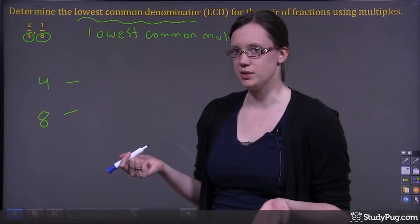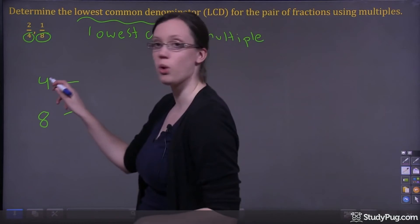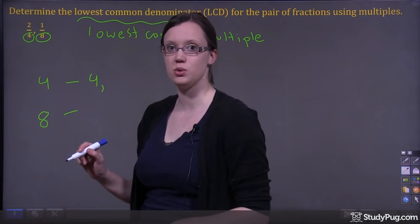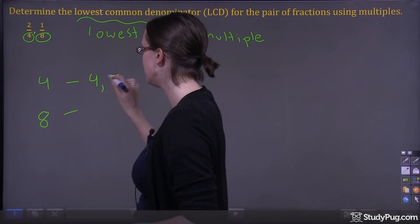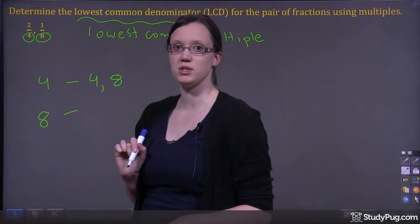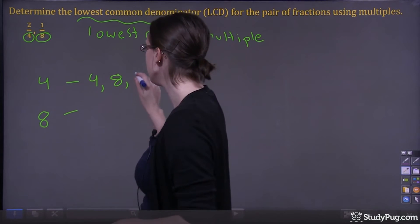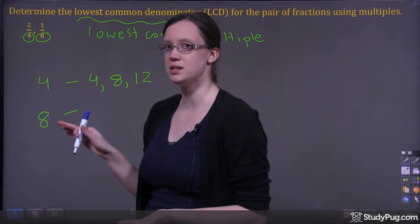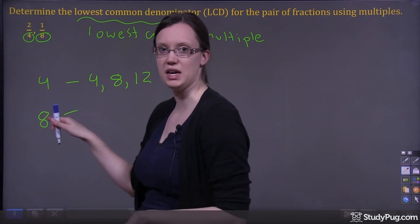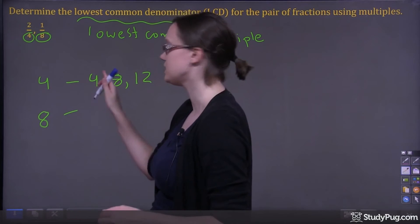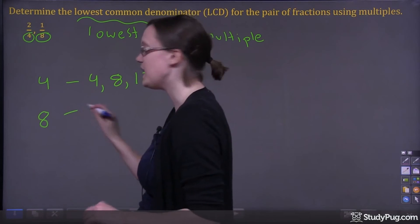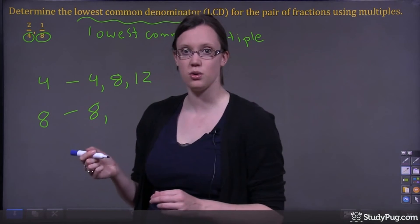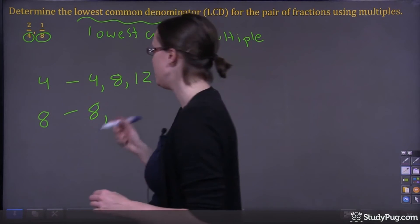Let's look at the multiples of 4. We know 4 times 1 is 4, 4 times 2 is 8, 4 times 3 is 12. Let's stop there and start with 8 to see if we come across a similar multiple. So 8 times 1 is 8, 8 times 2 is 16.